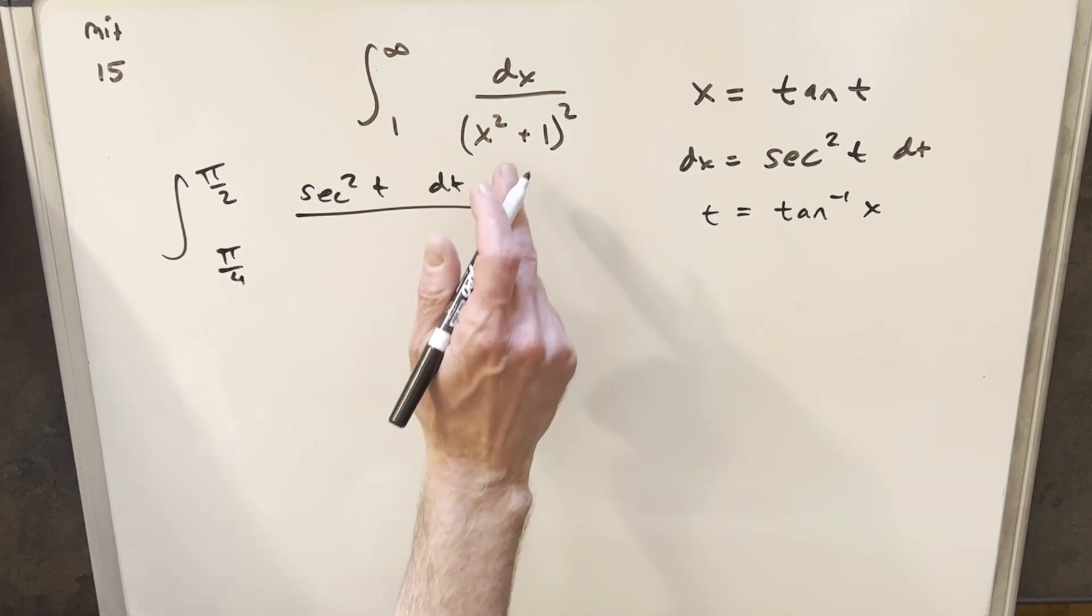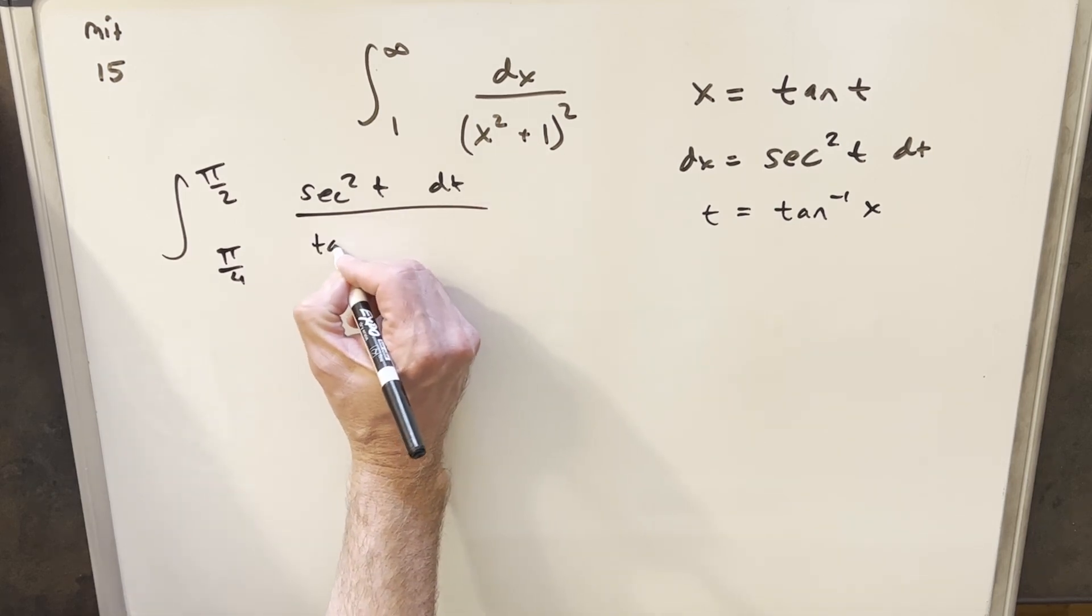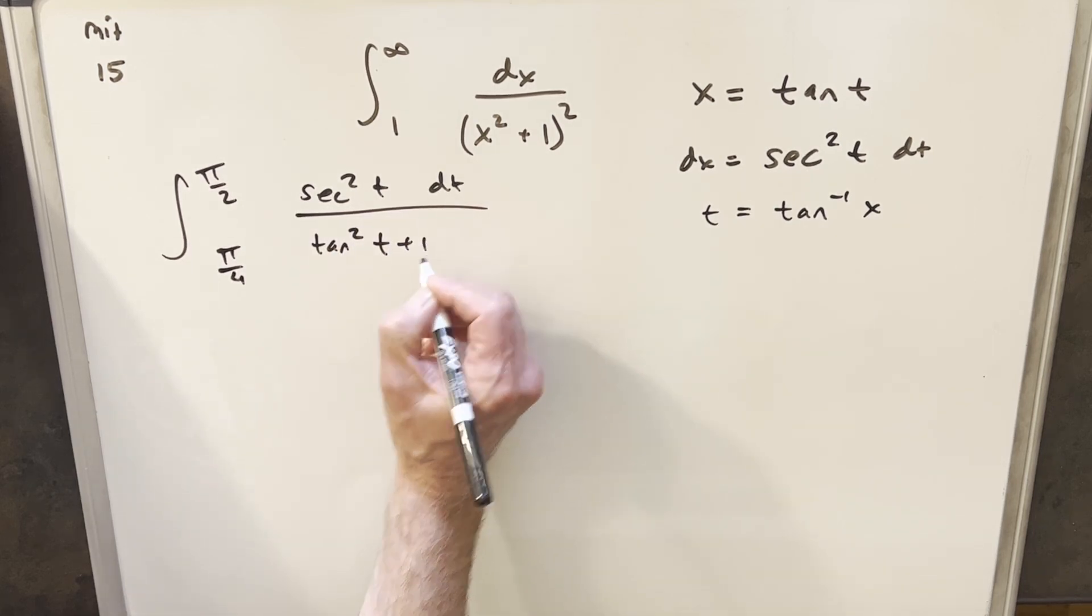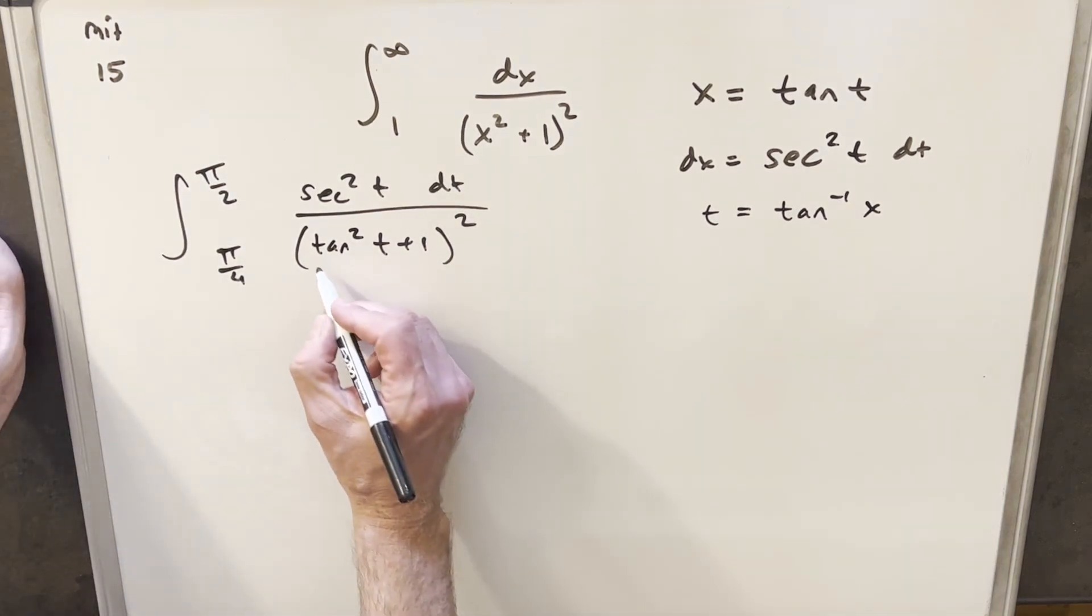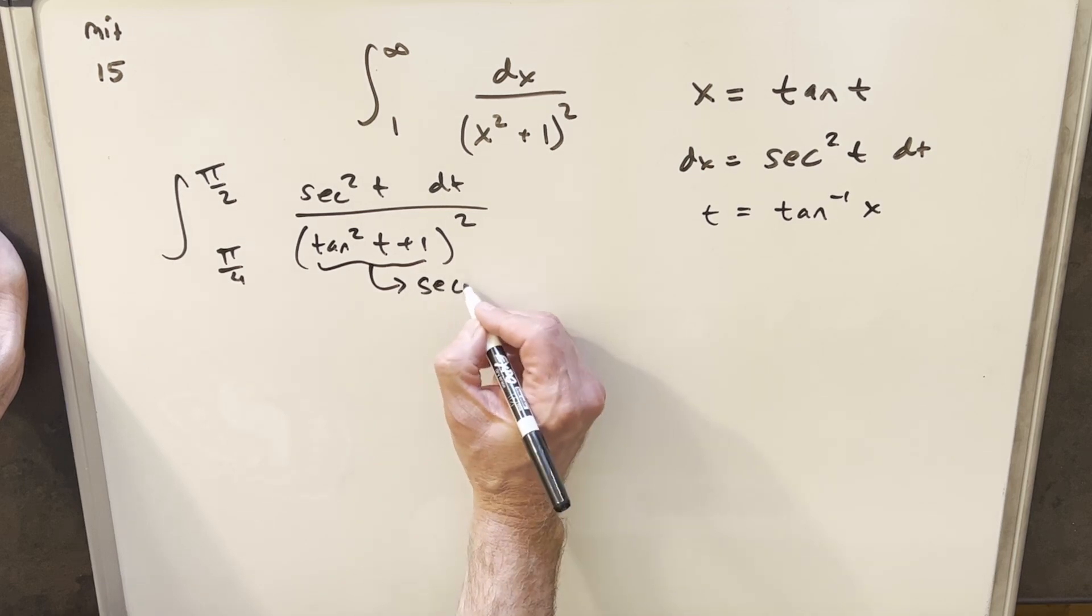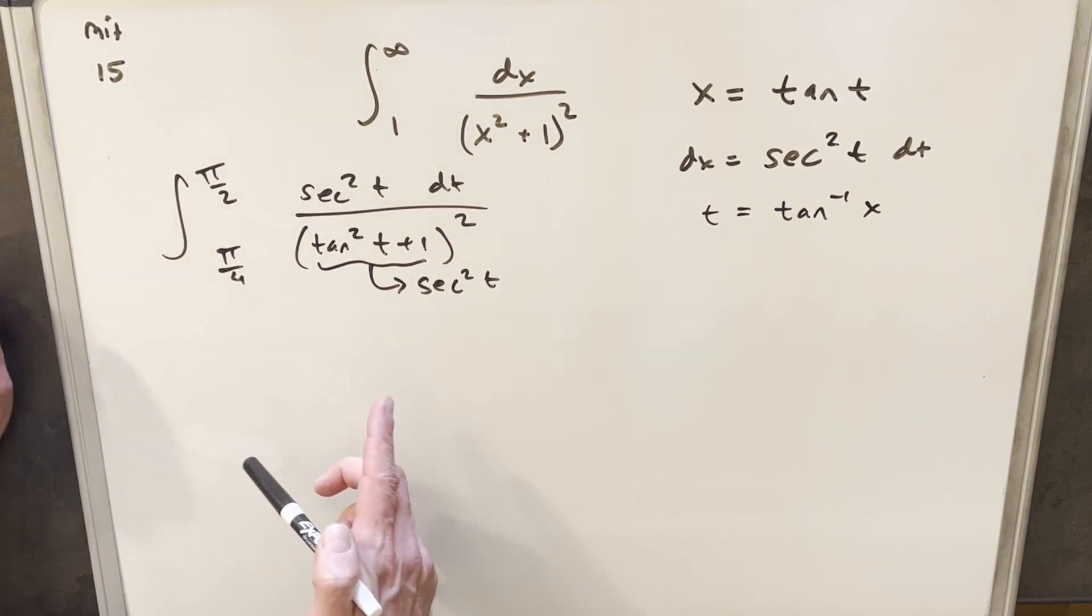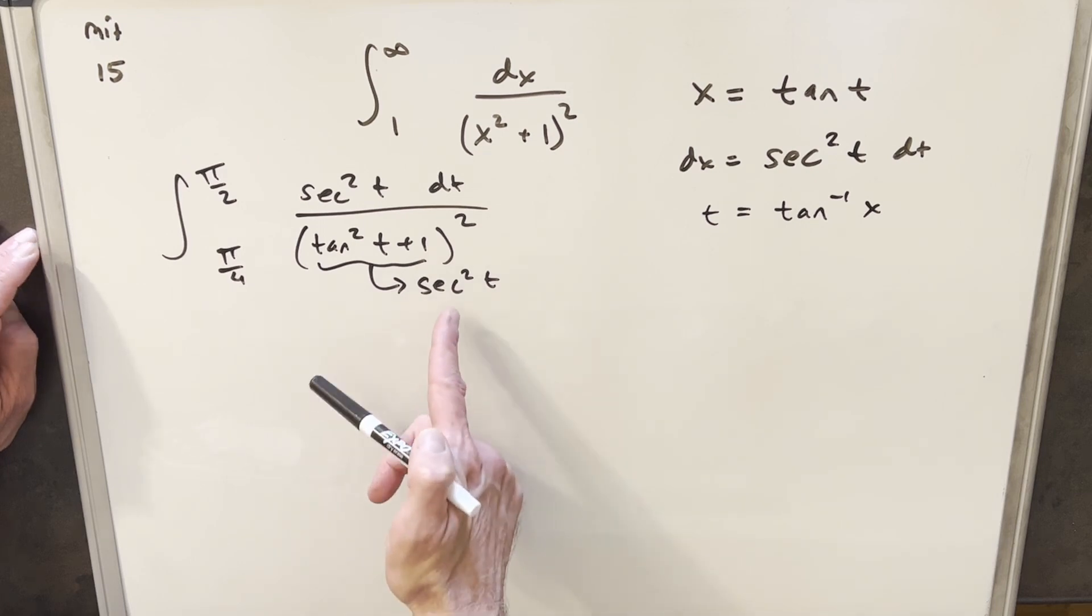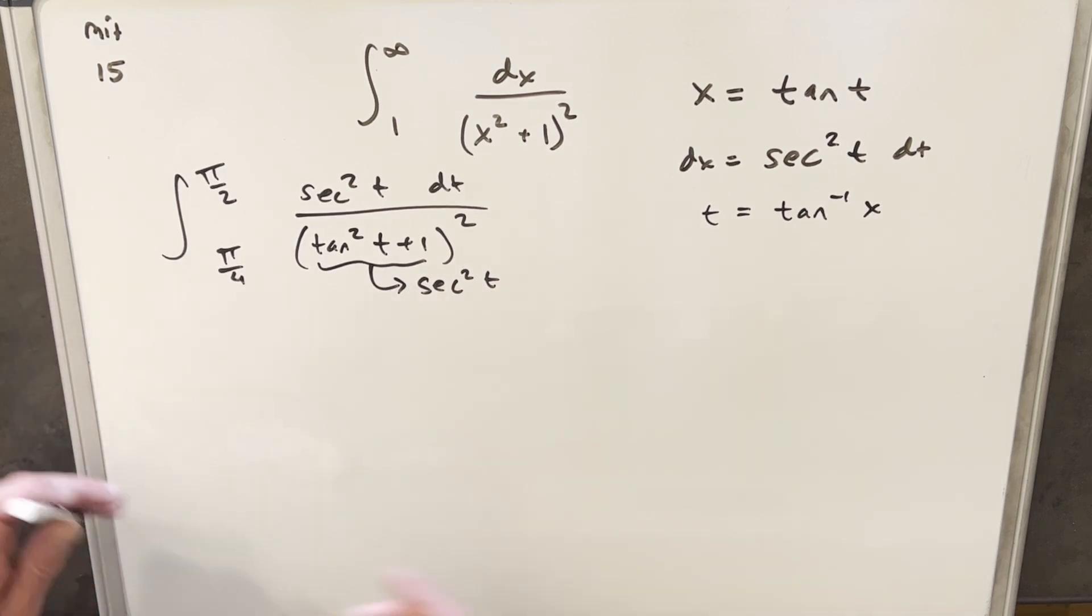So x² + 1 is going to be tan²(t) + 1, and this is all squared. The nice thing is we have this identity for this expression. This is the same thing as sec²(t). So we have sec²(t) squared, which is actually sec⁴(t) in the denominator.